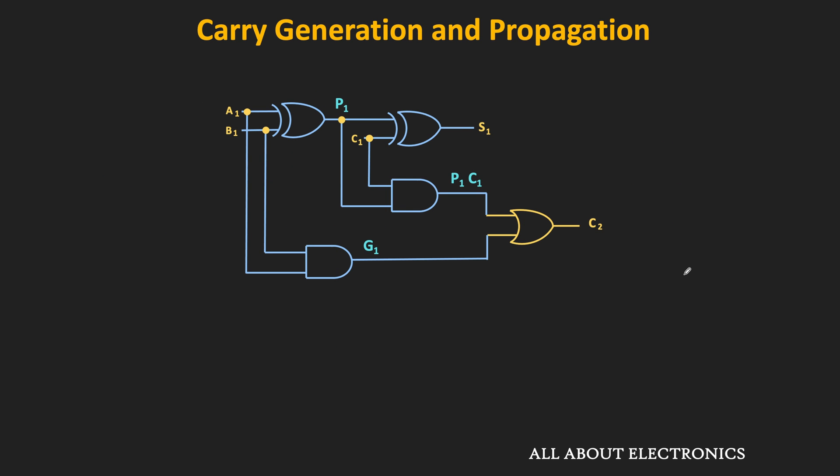Carry C1 is given to the next stage, where the inputs are A1 and B1, with input carry C1. The XOR and AND gate outputs are P1 and G1, while the upper AND gate output is P1·C1. For the second stage, C2 is high when either G1 is high or P1·C1 is high — meaning C2 = G1 + P1·C1. Substituting C1 = G0 + P0·C0 and simplifying gives the full expression for C2. The sum S1 = P1 XOR C1.